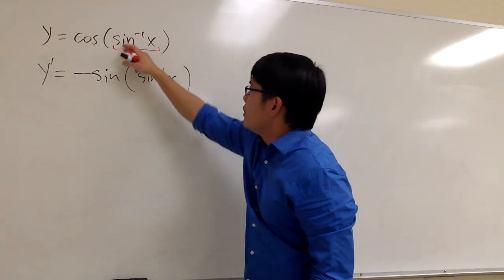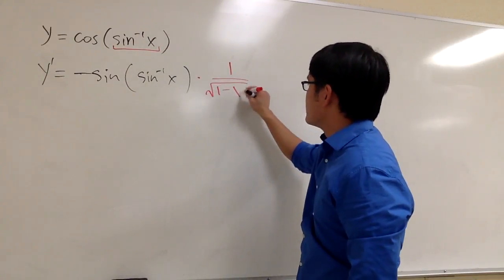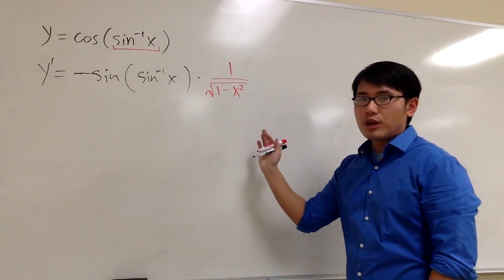Namely, the derivative of the inverse sine x is going to be 1 over square root of 1 minus x squared. Okay? And this is it. This is the construction of the derivative.